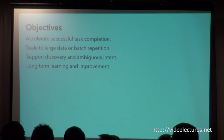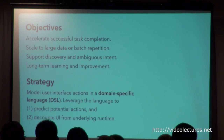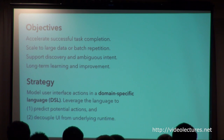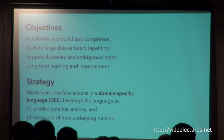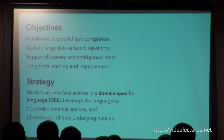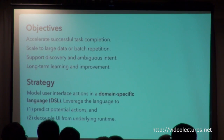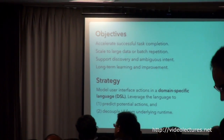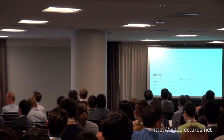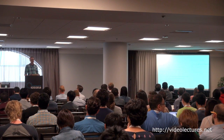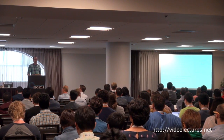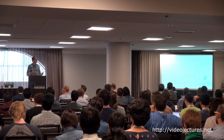The strategy we've been exploring is modeling the process of what a user will do with an app through domain-specific languages, borrowing ideas from programming languages. We model the space of potential actions so the system can reason about all the things the user might do. This allows us to predict potential actions, and also provides a way of decoupling the user interface from the runtime, enabling processing of data at much larger scales. I'll walk through two specific examples: one from visualization with Tableau, and one from our own research with Data Wrangler and Trifacta.